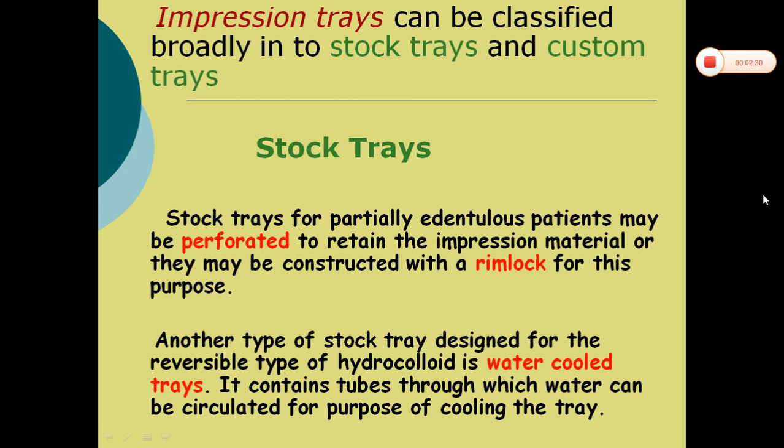Impression trays can be classified broadly into stock trays and custom trays. Stock trays for partially edentulous patients may be perforated to retain the impression material, or they may be constructed with a rimlock for this purpose. Another type of stock tray designed for reversible type of hydrocolloid, that is agar, is water-cool trays. It contains tubes through which water can be circulated for the purpose of cooling the tray.